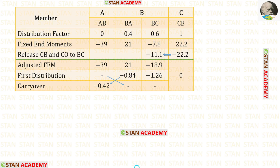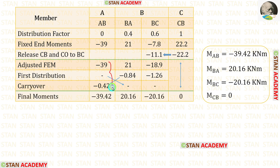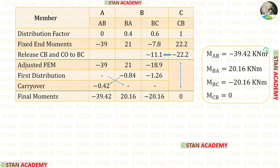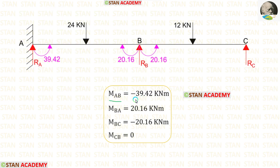Since there are no remaining values at joint B for BA and BC, we cannot proceed with a second distribution. Let us add all values to find the final moments. Adding the values for AB gives MAB = −39.42. For BA, MBA = +20.16. For BC, MBC = −20.16. MAB is negative, meaning it acts anti-clockwise. MBA is positive, meaning it acts clockwise. MBC is negative, meaning it acts anti-clockwise.